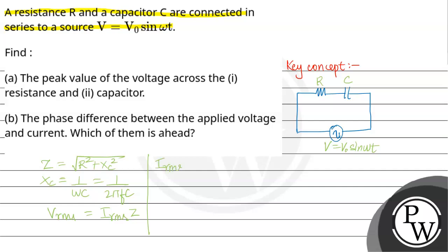RMS value, if you have to take here, it is maximum value divided by root 2. VRMS is Vmax divided by root 2. Phase difference, the difference is between current and voltage. With the help of this key concept, we will proceed further.